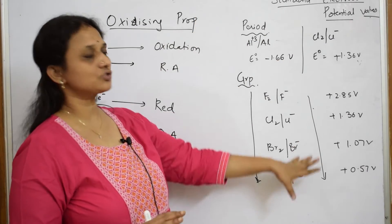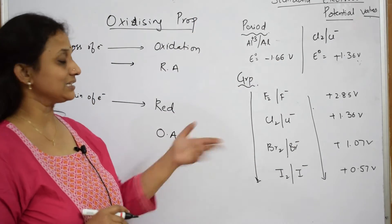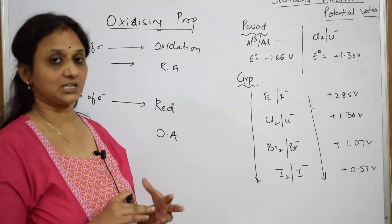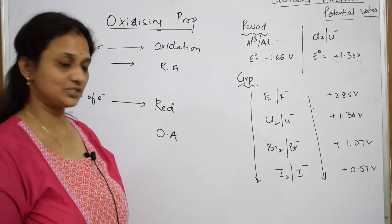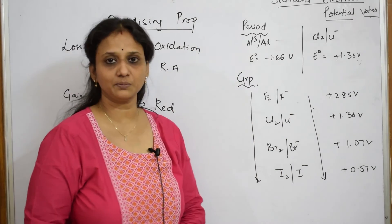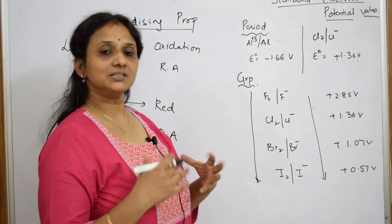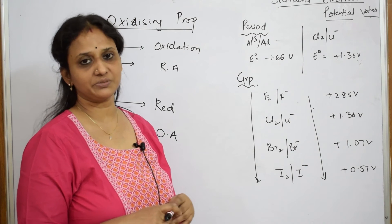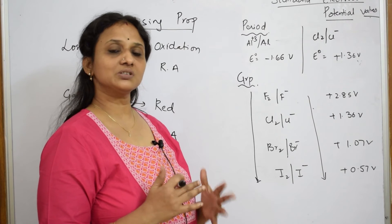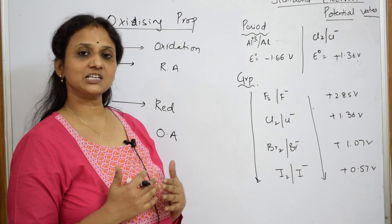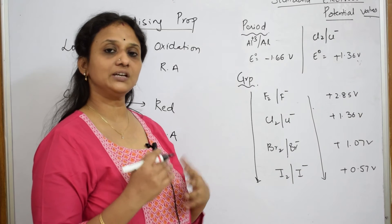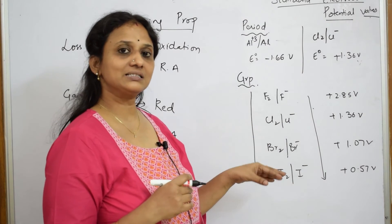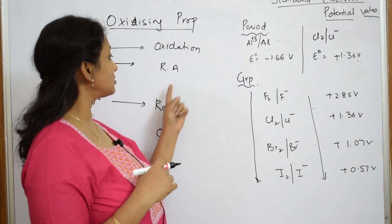I have a list of electrode potentials. This is called the standard electrode potential value or standard electrode potential chart. I have not done the complete potential chart here, but what is required for p-block I have made. This standard electrode potential chart — you have a separate chapter called electrochemistry in grade 12. This basically explains whether a particular element is acting as an oxidizing agent or reducing agent.